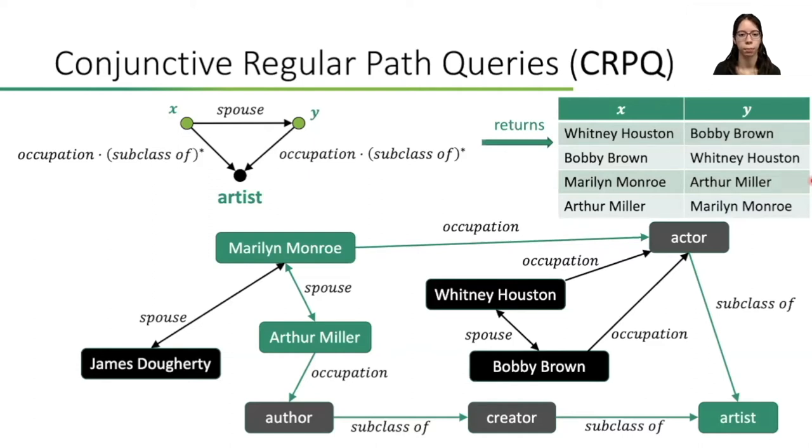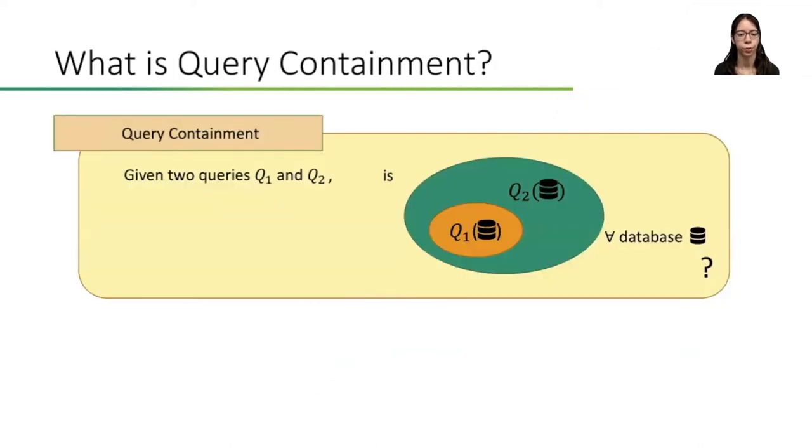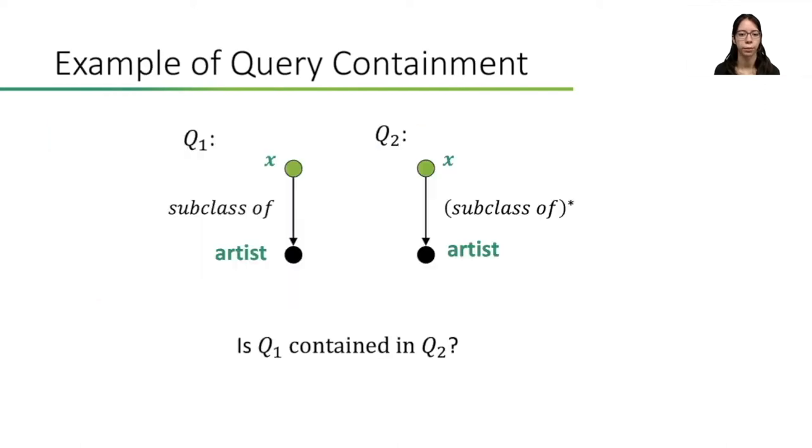Given two queries Q1 and Q2, the query containment problem asks if, for every database, the outputs of Q1 are a subset of the outputs of Q2. This means that, for every database, every answer of Q1 on the database is also returned by Q2. And if this is the case, we say that Q1 is contained in Q2.